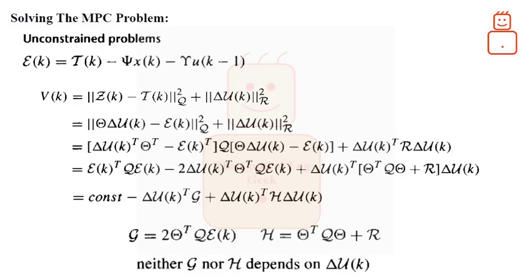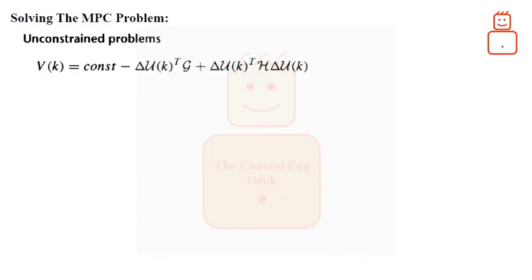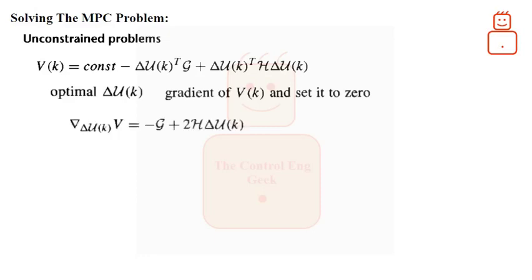Now let us stick to our last function. Which through it, we attempt defining the optimum control change action sequence. To find the optimum delta U of k, we need to compute the gradient of V of k and then equal it to zero. The gradient is. And by equaling it to zero and then, solving for the delta U of k, we have the optimum control change sequences given as.